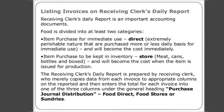Listing invoices on the receiving clerk's daily report. The receiving clerk's daily report is an important accounting document. Food is divided into at least two categories: items purchased for immediate use — direct, extremely perishable items purchased on a more or less daily basis for immediate use, which become a cost immediately; and items purchased to be kept in inventory — stored items such as meat, cans, bottles, and boxes, which become a cost when issued for production. The receiving clerk prepares the report by copying data from each invoice to the appropriate columns, then entering totals under the journal heading: Purchase — General Distribution, Food Direct, Food Stores, or Sundries.